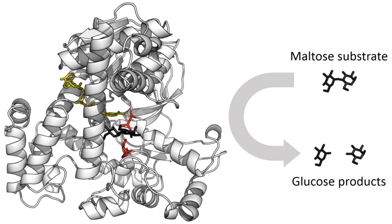Coenzymes are usually continuously regenerated and their concentrations maintained at a steady level inside the cell. For example, NADPH is regenerated through the pentose phosphate pathway and S-adenosylmethionine by methionine adenosyltransferase. This continuous regeneration means that small amounts of coenzymes can be used very intensively. For example, the human body turns over its own weight in ATP each day.